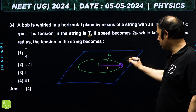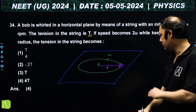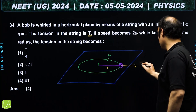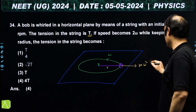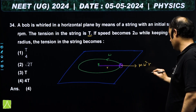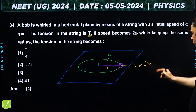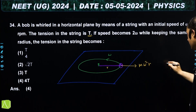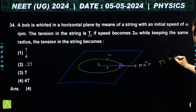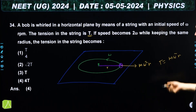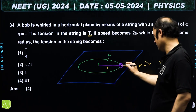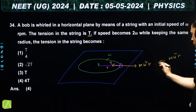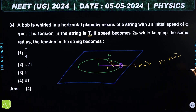Analyzing in the rotating frame, the pendulum experiences a centrifugal force of mω²r. This centrifugal force is balanced by tension T, so T = mω²r.